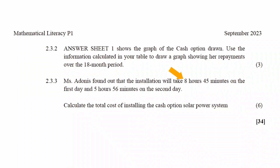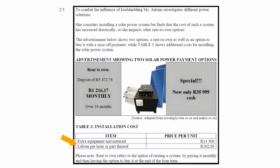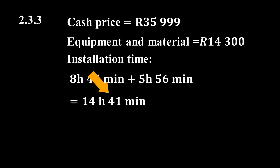The installation took 8 hours 45 minutes on day one and 5 hours 56 minutes on day two, giving a total time of 14 hours and 41 minutes. Note that labour is charged per hour or part thereof — this means that if the time extends into the next hour, we must round up to the next full hour, even if it is just one minute over. The phrase 'or part thereof' comes up frequently in exam papers. Since we have 41 minutes into the next hour, we round up to a total of 15 hours.